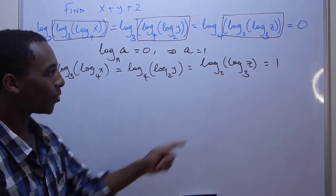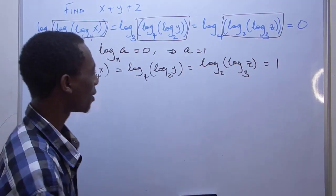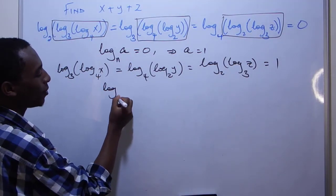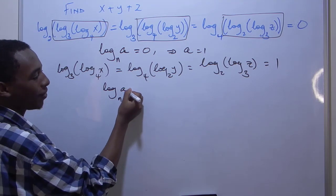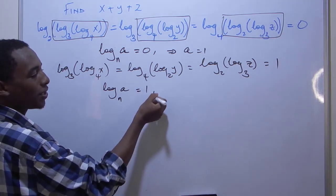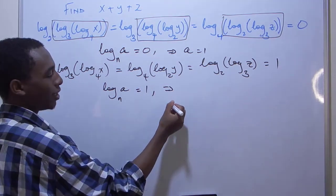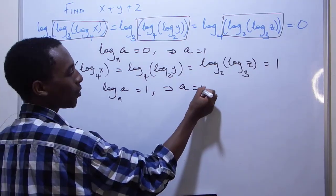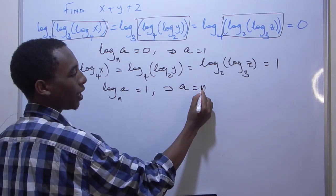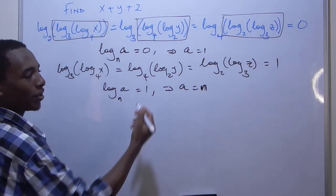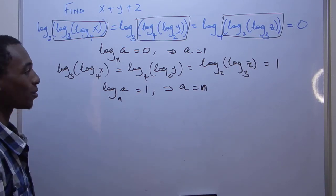Then we have a one here, which is also a good thing because we know that if I have log of some base a of an argument a, if this equals to one, then it directly implies that a equals to n. So if the argument and the base are equal, then the log is always going to be equal to one.